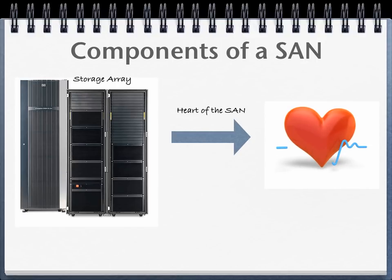You also have fiber channel switches, and this is what makes the whole storage area network connectivity work. You generally have two classes of fiber channel switches. You have an entry-level class — these are normally departmental-type switches. A lot of organizations put these entry-level fiber channel switches at regional, smaller sites — they generally have about 32 ports. Then you have the enterprise-level, what we call director class fiber channel switches, which have a ton more fiber channel ports. These are generally used at the main headquarters because they're more robust and you're going to get faster performance.